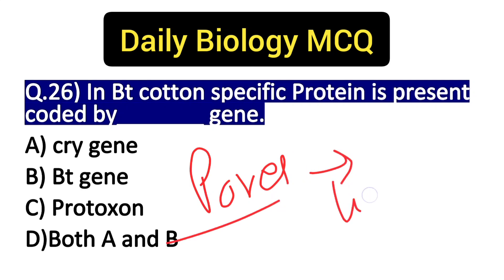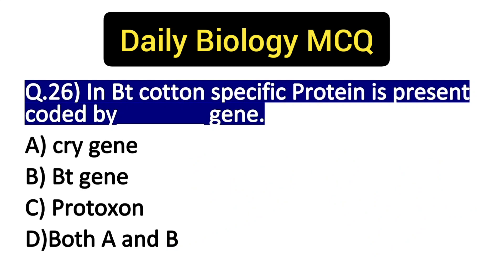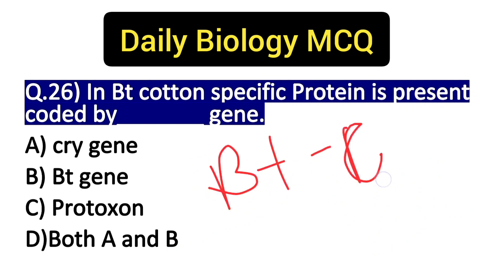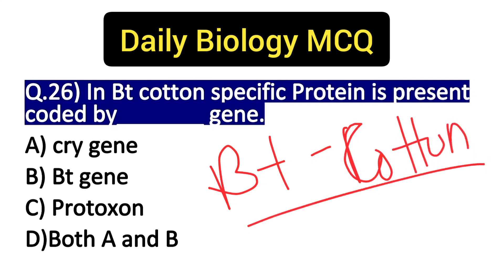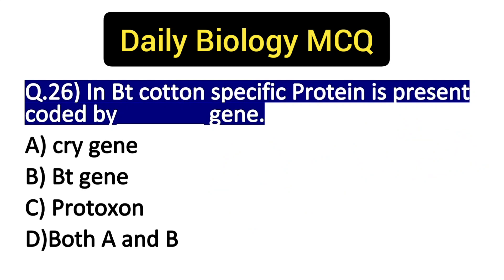Active protein उस इंसेक्ट के mid-gut region में जो epithelial cells होती हैं उनमें pores create कर देती है, जिसकी वजह से cell lysis हो जाता है, cell destroy हो जाता है। BT cotton या BT plant products पर separate video जरूर बनाऊंगी क्योंकि यहां से बहुत ज्यादा important questions बनते हैं। मिलते हैं next MCQ में।